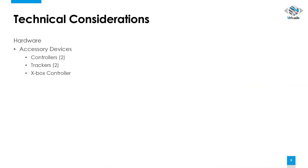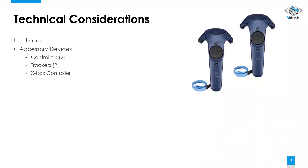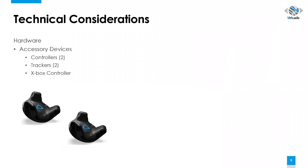Moving on with our hardware, we'll next talk about our accessory devices. You should have two controllers, otherwise called hand controllers, because these are held within the client's hands. You should also have two trackers. These trackers can be used to track the headset and speed of movement.